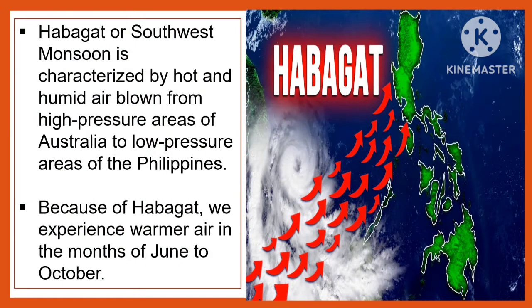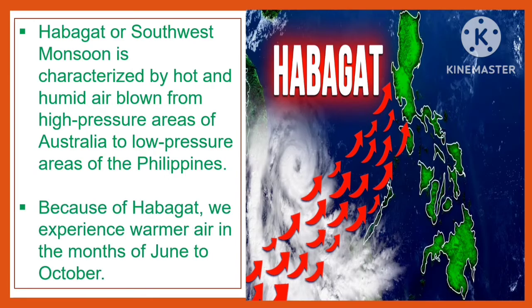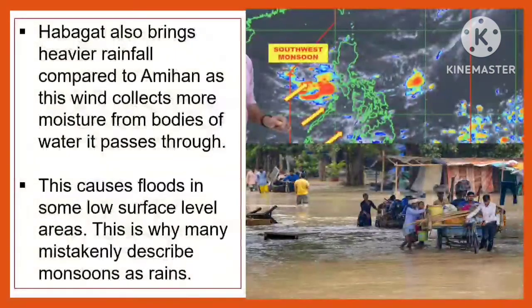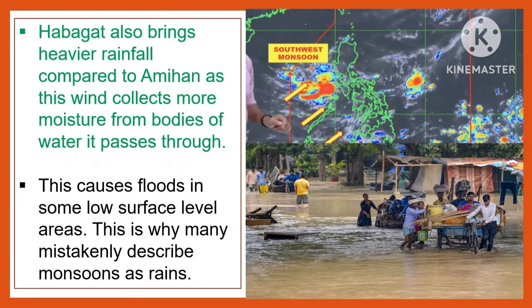Habagat, or the Southwest Monsoon, is characterized by hot and humid air blown from high-pressure areas of Australia to low-pressure areas of the Philippines. Because of Habagat, we experience warmer air during the months of June to October. Habagat also brings heavier rainfall compared to Amihan, as this wind collects more moisture from the bodies of water it passes through.